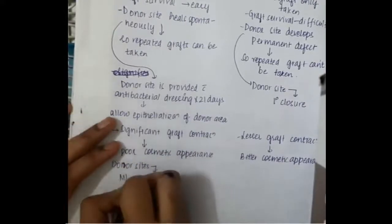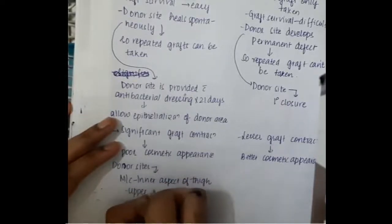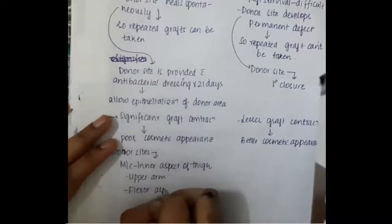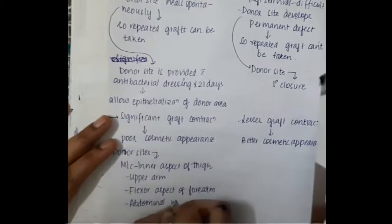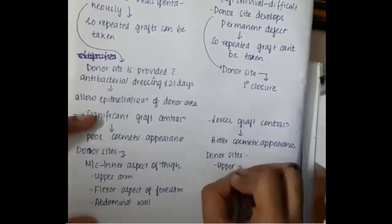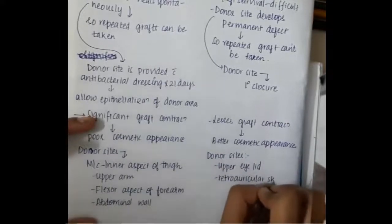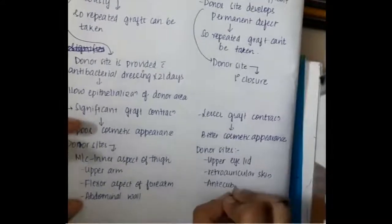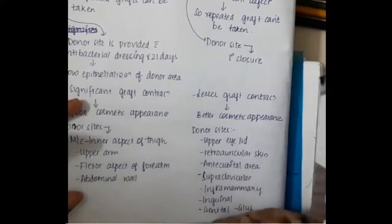Donor sites in split thickness skin graft include most commonly the inner aspect of thigh, upper arm, flexor aspect of forearm, and the abdominal wall. Whereas in full thickness or Wolfe grafting, donor sites include the upper eyelid, retro-auricular skin, antecubital area, supraclavicular, inframammary area, inguinal area, genital area, and gluteal areas.